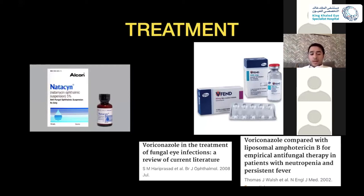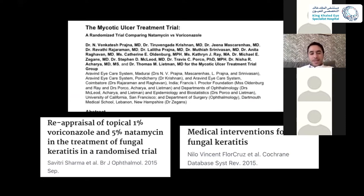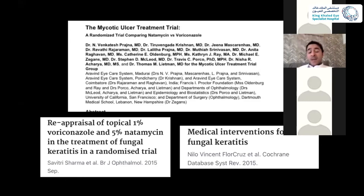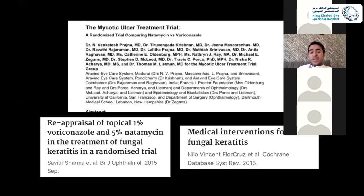However, there was no randomized clinical trial until the MUTT study came along. This is a well-designed randomized clinical trial conducted in India. The rationale was to compare natamycin versus voriconazole in fungal keratitis. They recruited 323 patients with smear-positive fungal keratitis into two arms: one arm received voriconazole 1%, and the other used natamycin 5%. Medication was given every hour until re-epithelialization, then QID for three weeks, with patients seen every three days. The corneal ulcer severity had VA ranging from 20/40 up to 20/400.